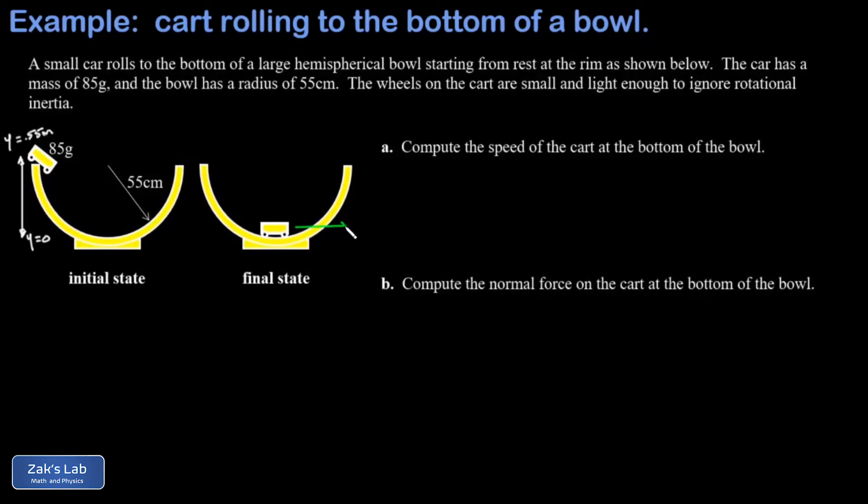By the time it rolls to the bottom of the bowl, that gravitational potential energy decrease is turned into kinetic energy and I get some final speed v. So we write down conservation of energy: E initial equals E final. In my initial state I don't have any kinetic energy, all my energy is gravitational potential energy, and that's given by mgy initial. In my final state I don't have any gravitational potential energy because I put the zero of my coordinate system there.